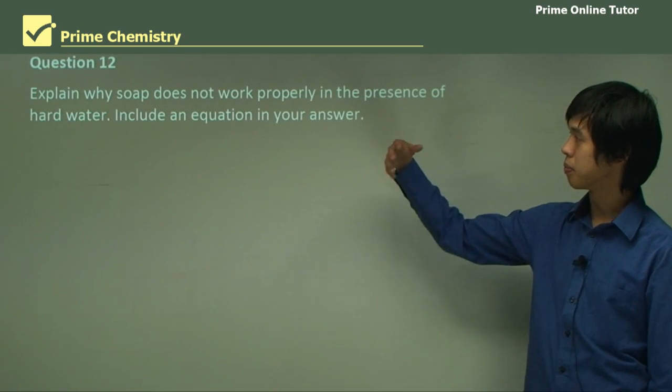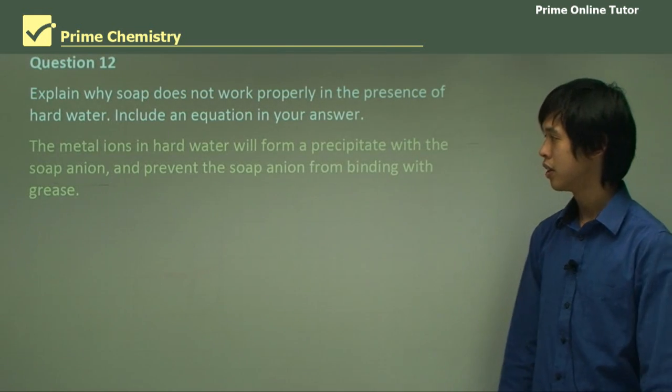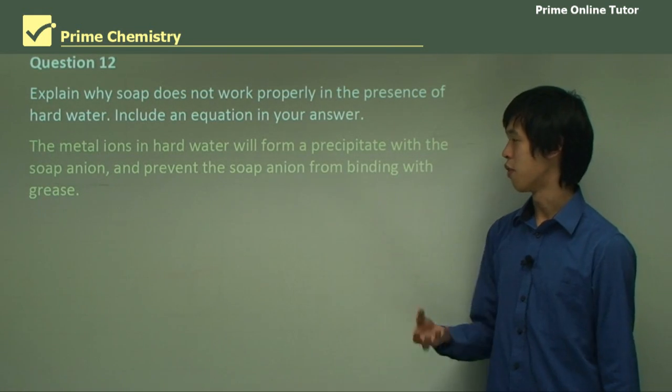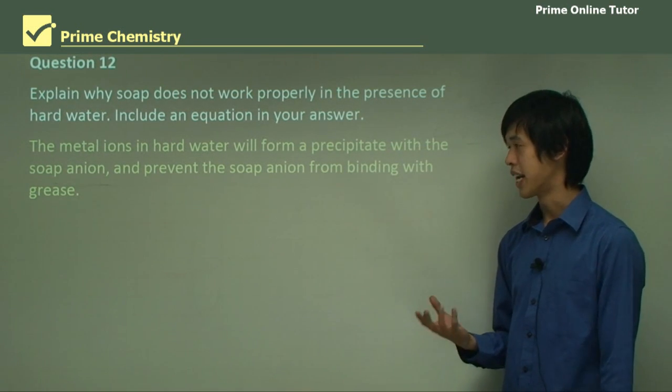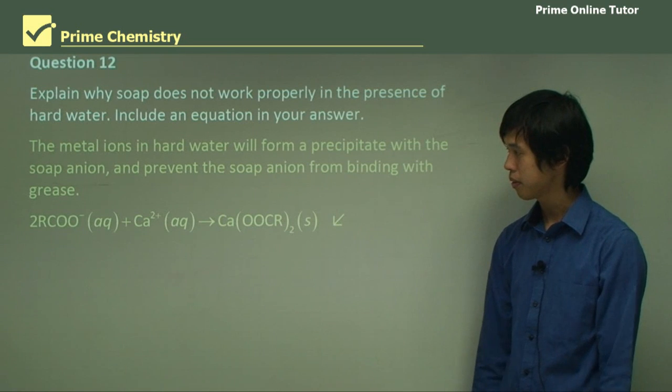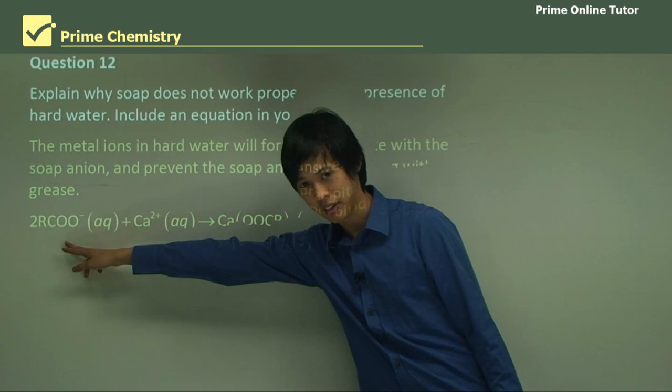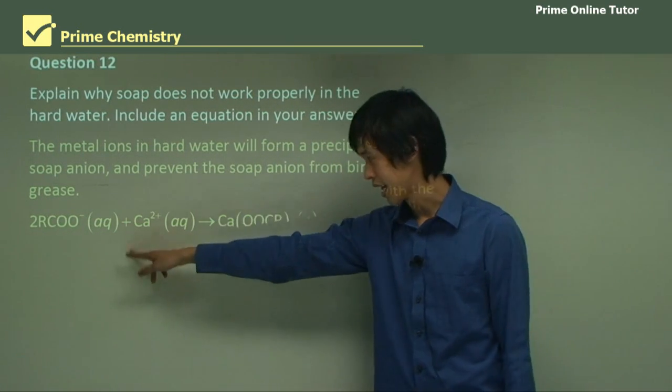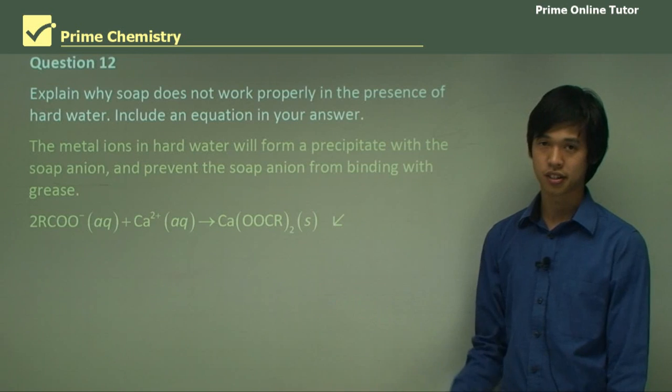Explain why soap does not work properly in the presence of hard water—include an equation. The metal ions in hard water will form a precipitate with a soap anion and prevent the soap from binding with grease because it's precipitated out. Here's our equation: You get two generalized soap ions here, plus calcium, gives you calcium plus the two generalized soap, and it's a solid.